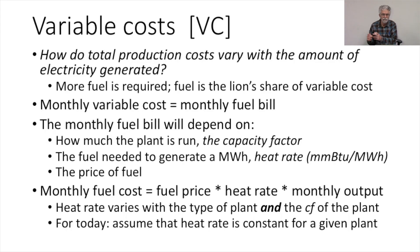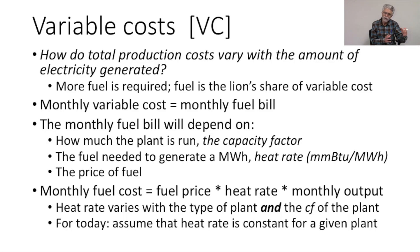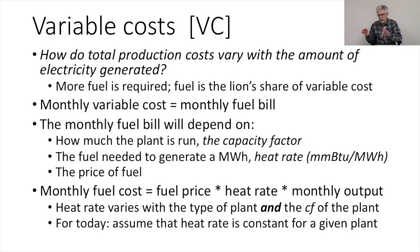We've already talked about increasing maintenance of the generating equipment, but the big variable cost for operating a power plant — for most power plants — is the fuel cost. Fuel is just the lion's share of the variable cost. So I'm going to talk about the monthly variable cost as the monthly fuel bill. We have some operation and maintenance costs that are part of that, but they're small compared to the monthly fuel bill, so I'm going to ignore that small portion of O&M and include it in our monthly fuel bill.